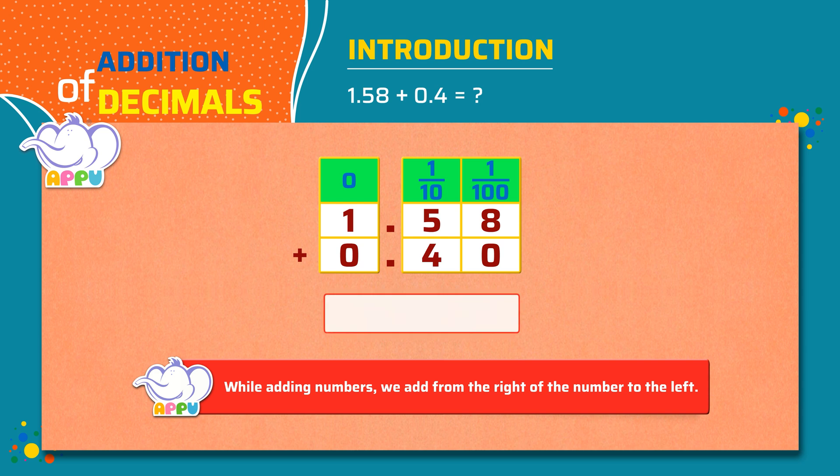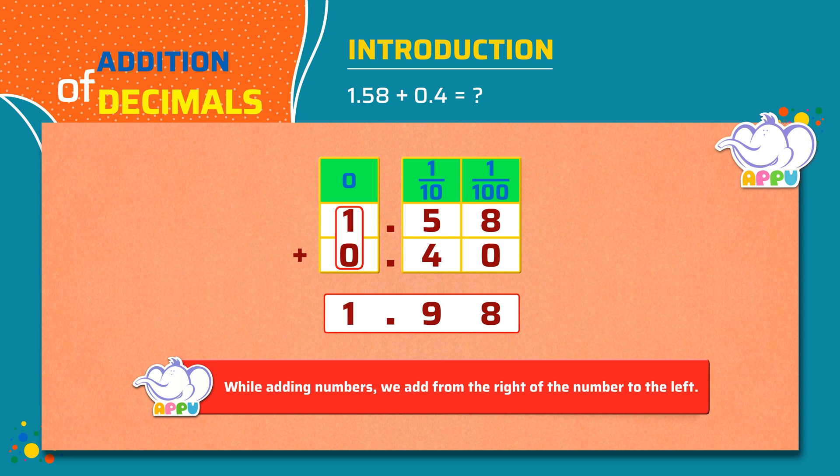Now we add the hundredths. We get 8 hundredths. We add the tenths. We get 9 tenths. We place the decimal point. We add the ones. We get 1 ones. The answer is 1.98.